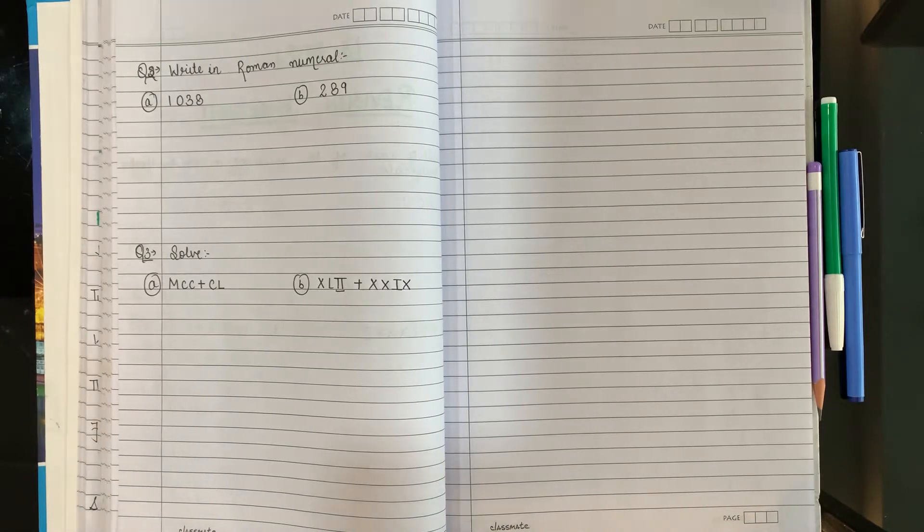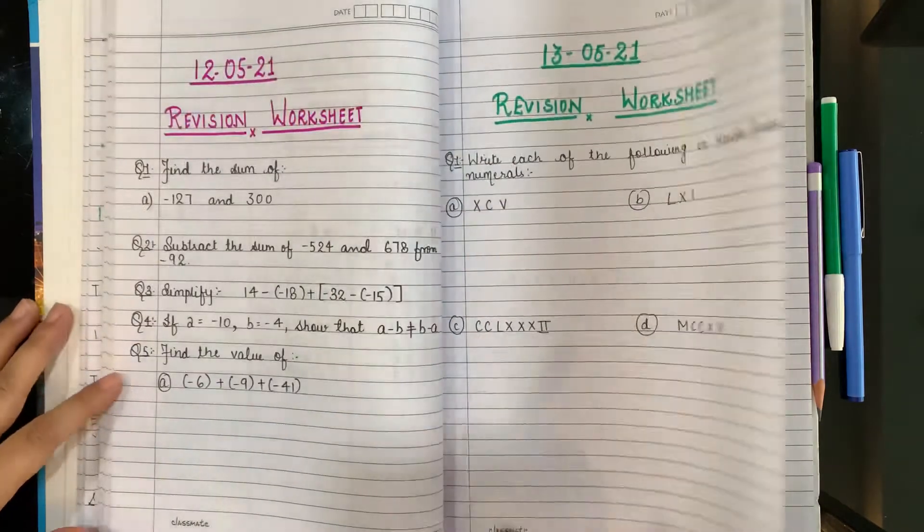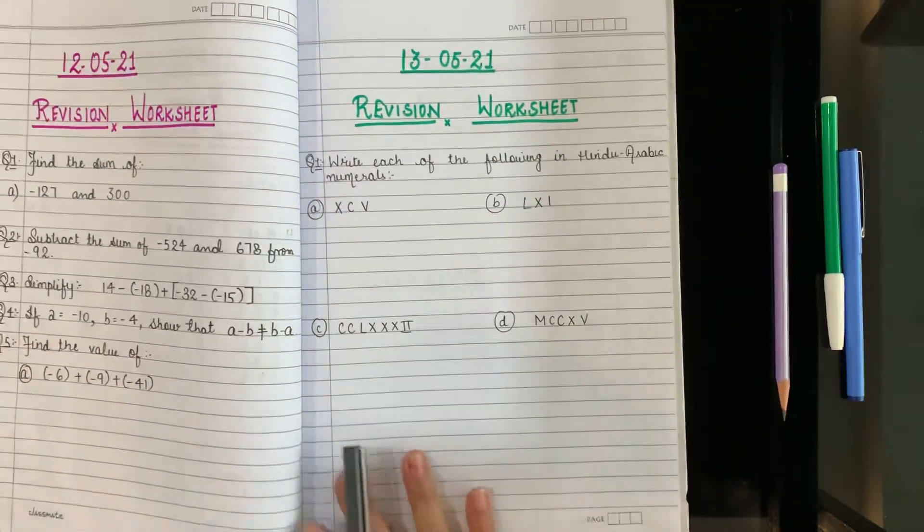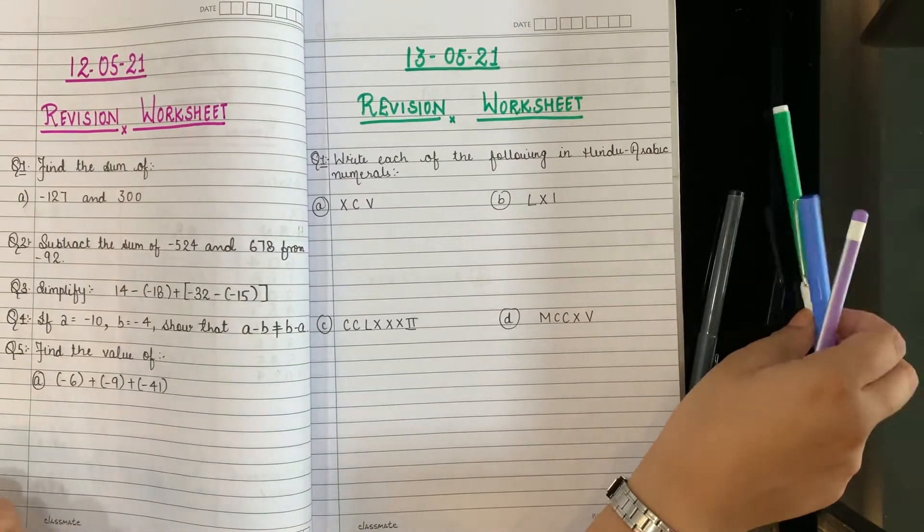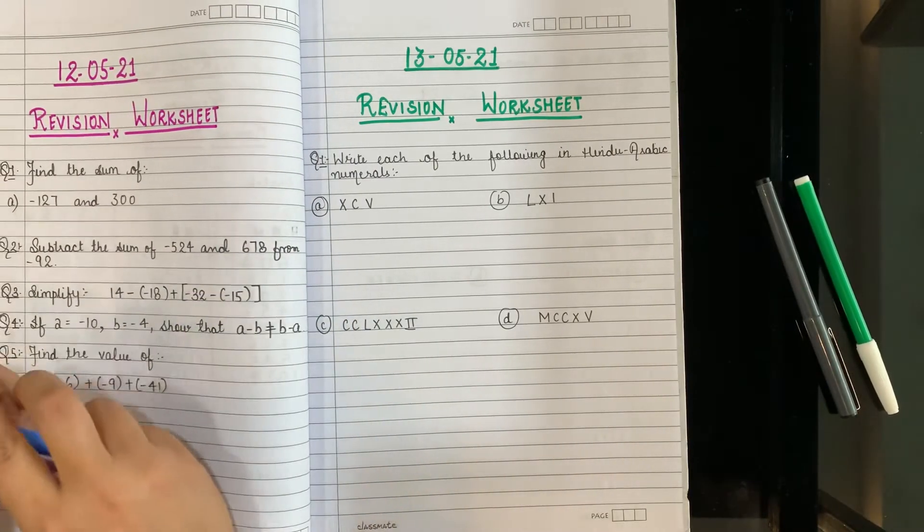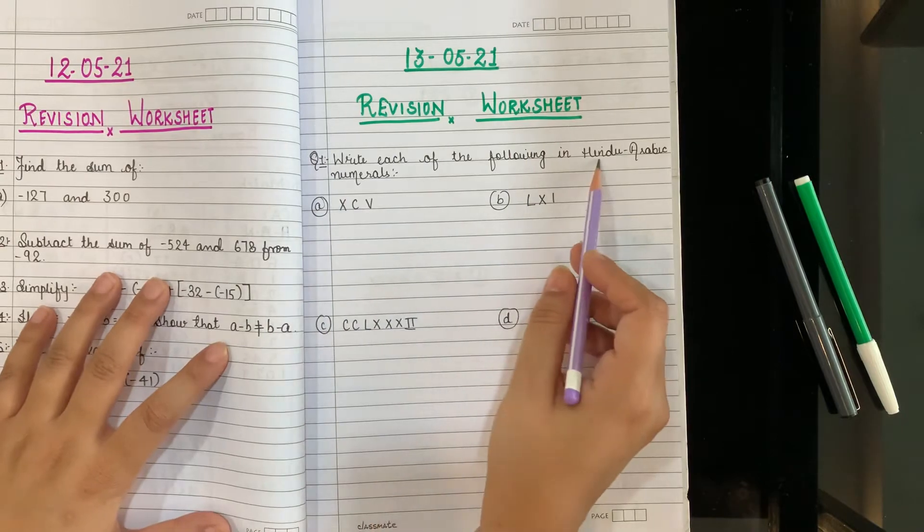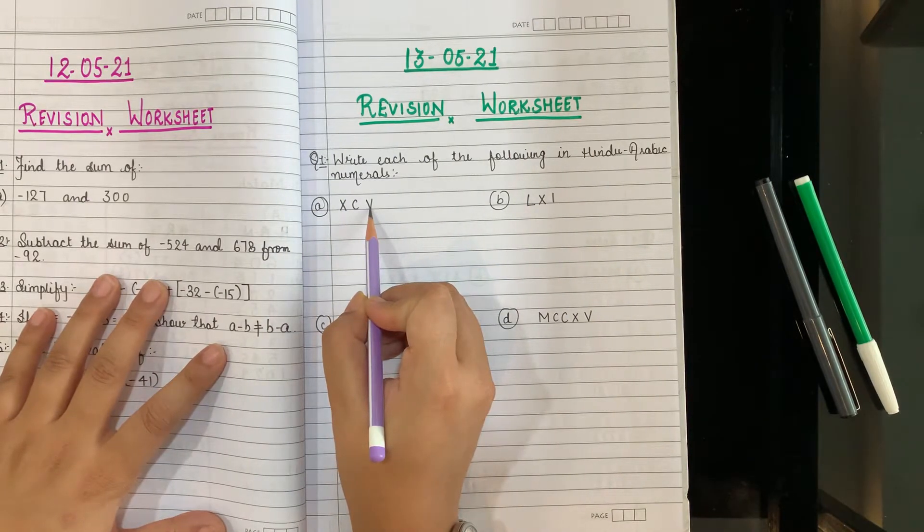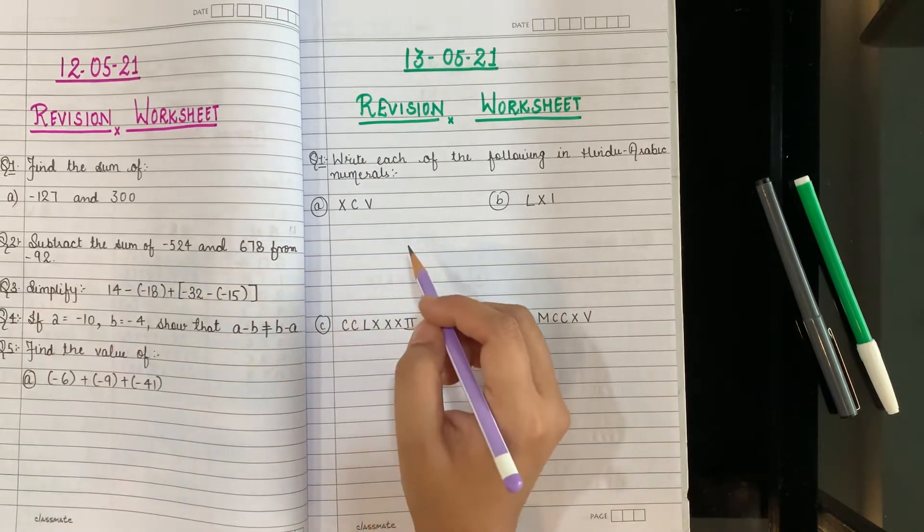Now this is your revision worksheet. What is this? This is your revision worksheet. We have to solve this worksheet today. Today we will solve this worksheet because a similar kind of worksheet is going to come in your formative 1. Let's start with question number 1 children. In this question you have to convert the Roman numeral into Hindu Arabic.